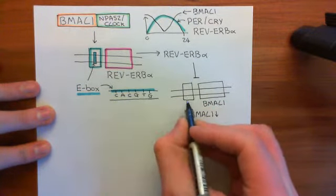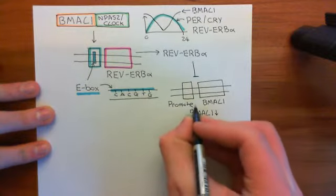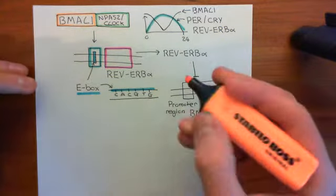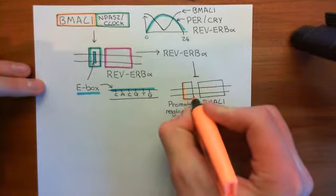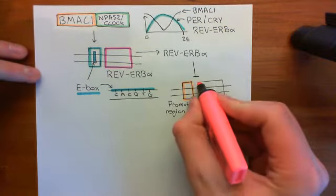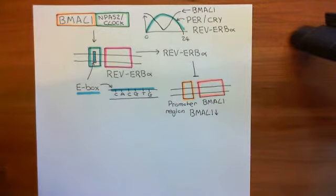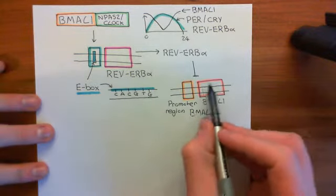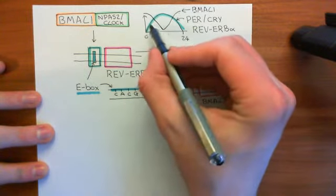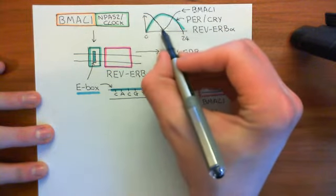Rev-ERB-alpha binds to the promoter region of the BMAL1 gene — I'll colour this promoter region in orange — so it binds to the promoter region of the BMAL1 protein gene, and it's a transcriptional repressor. It blocks the expression of BMAL1 by stopping RNA polymerase 2 from being able to bind to the promoter region, and therefore leads to BMAL1 levels within the cell going down. So whilst Rev-ERB-alpha goes up — in phase with period and cryptochrome proteins — BMAL1 therefore also comes down.